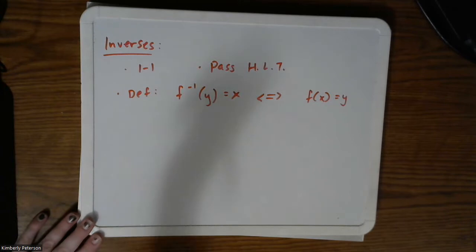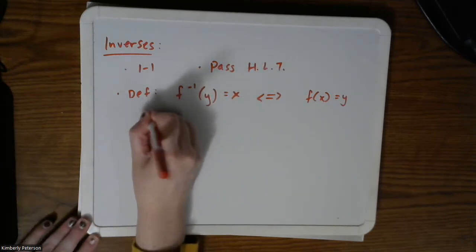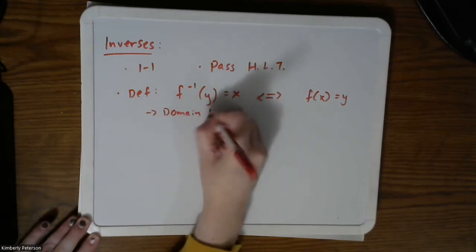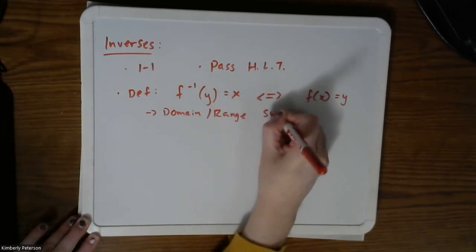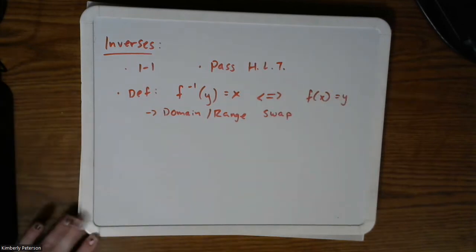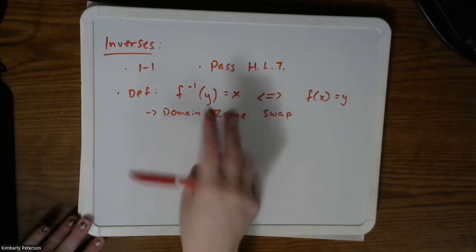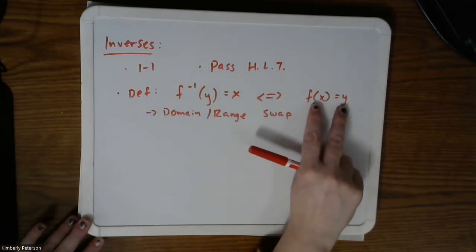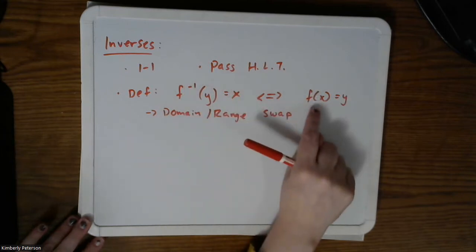So let's talk about some of the key concepts here. The idea is that domain and range swap. So when I do an inverse, what I'm doing is I'm just flipping x and y. And you can see that in the notation and then I'm changing here. Here's the inverse. Here's the original function.